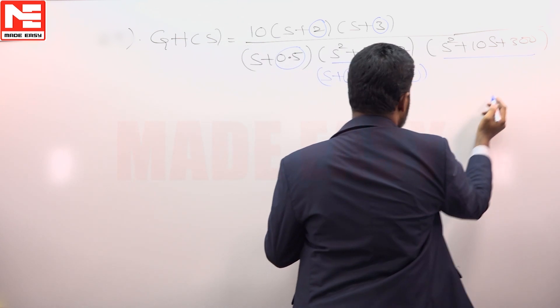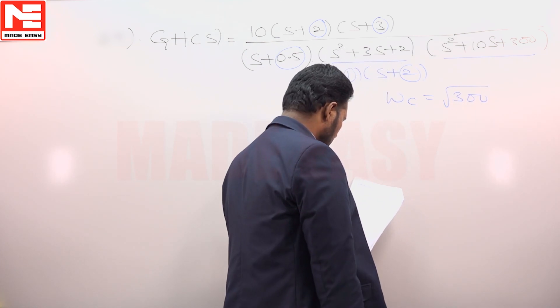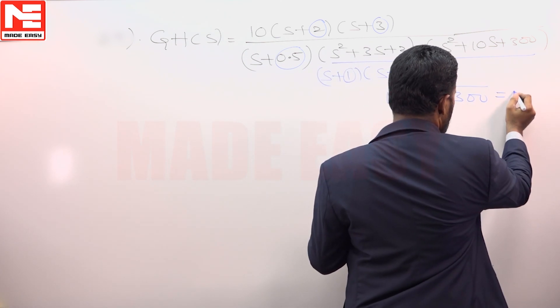These poles are complex. Corner frequency will be natural frequency, root of 300, that comes out to be 17.32.